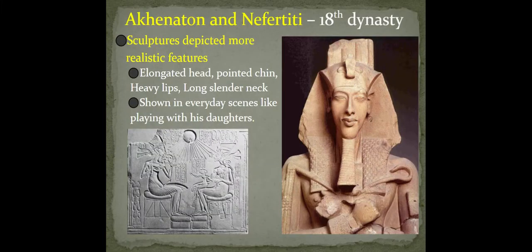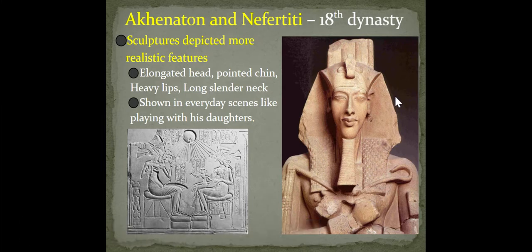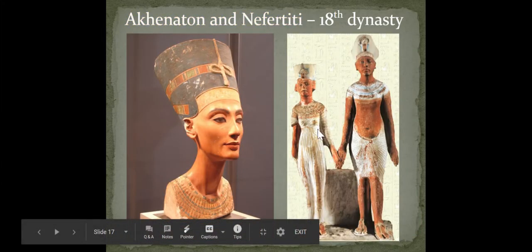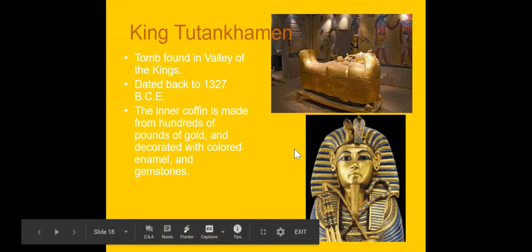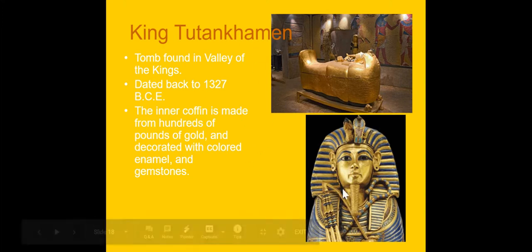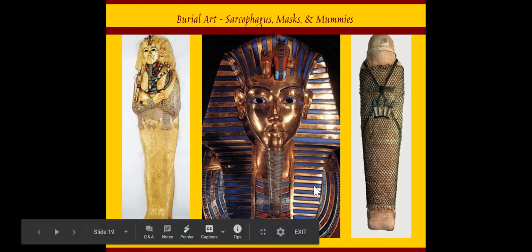Now we'll move on to more actual 3D sculpture. This is an example of Akhenaten — I'm sorry, I don't know how to pronounce it really well. You can see the relief sculpture there, but I want you to focus on the actual sculpture. It's kind of an elongated head, pointed chin, heavy lips, but notice how realistic it is. If you take a look at this sculpture of Nefertiti, she is really realistic, looks pretty much like a normal person. King Tutankhamun — you guys have probably heard of him before. You can see the tomb and the elaborate detail put into this, and it's made out of gold as well. Very, very realistic, and expensive.